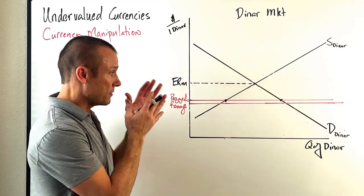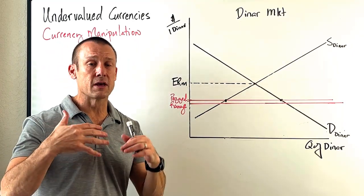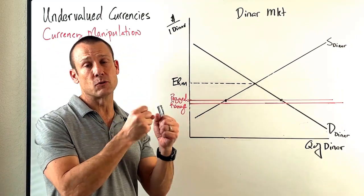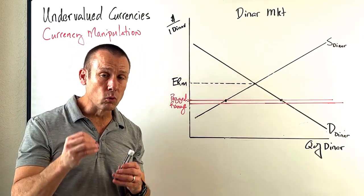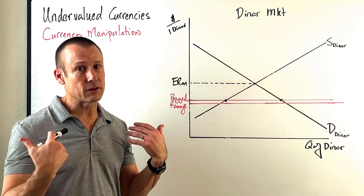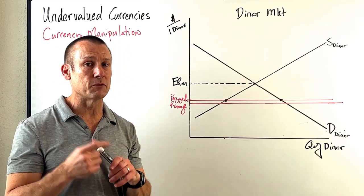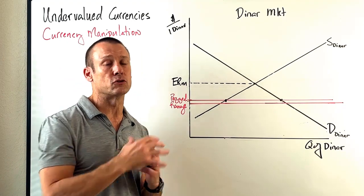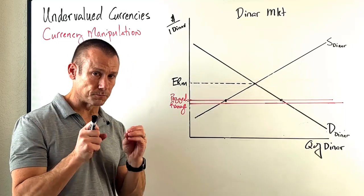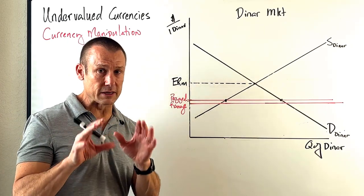An undervalued currency. This graph is showing an undervalued currency — it's showing the Jordanian dinar as being undervalued. I'm using the Jordanian dinar because it is an actual currency that is pegged to the U.S. dollar. This is not based on anything actually happening with the Jordanian dinar. Undervalued currencies only come into play with currencies that are pegged to another currency.